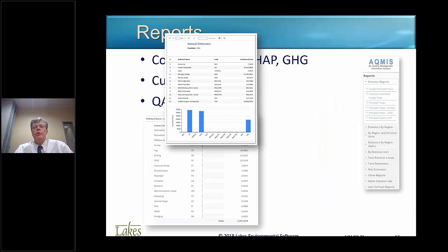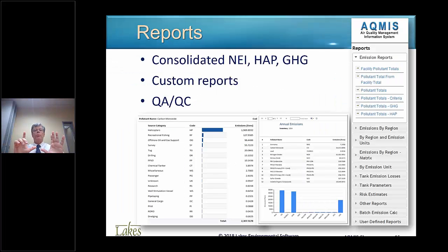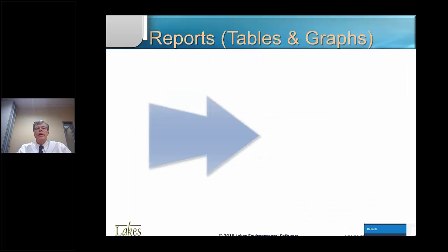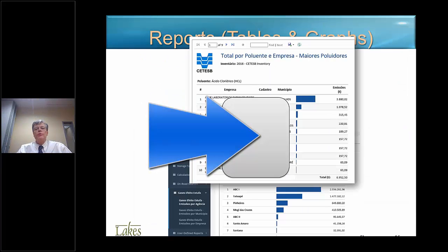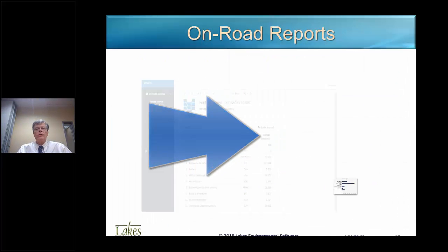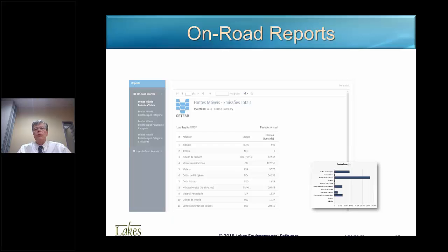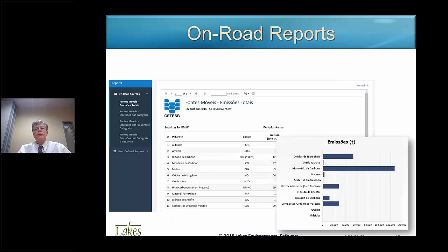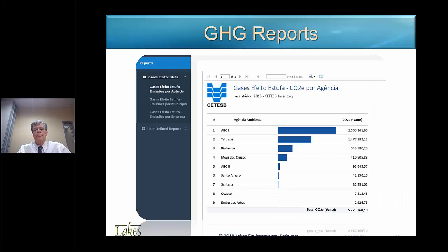We have different types of reports — text and table reports, reports with graphics, reports for greenhouse gases, and reports for mobile sources.